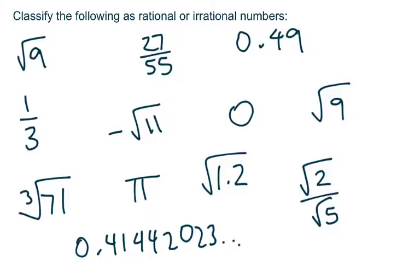Classify each of the following as rational numbers or irrational numbers. And we'll circle the rational ones in light blue, and we'll circle the irrational ones in that reddish-orange color.